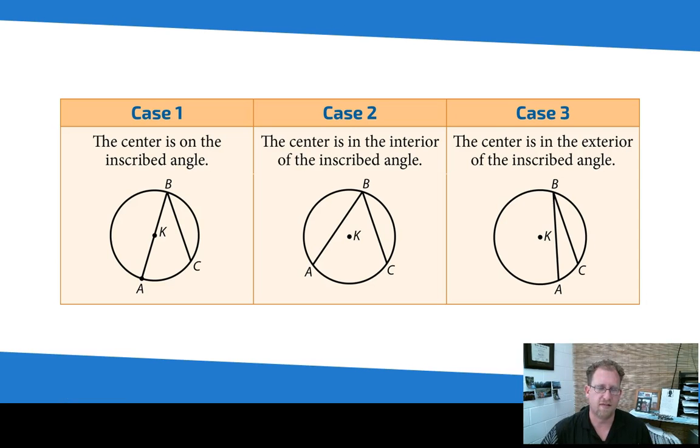There are three cases of this, and you will need to use these three cases in proofs. If the center is on the inscribed angle, if one of the sides of the inscribed angle is in fact a diameter instead of just a chord, that's one case. Here the center of the circle is inside the inscribed angle, that's another case, and here the center of the circle is outside the inscribed angle. You can prove all three of these. It's not easy, it's a lot of work, but you can do it, and we will do it together in class tomorrow.